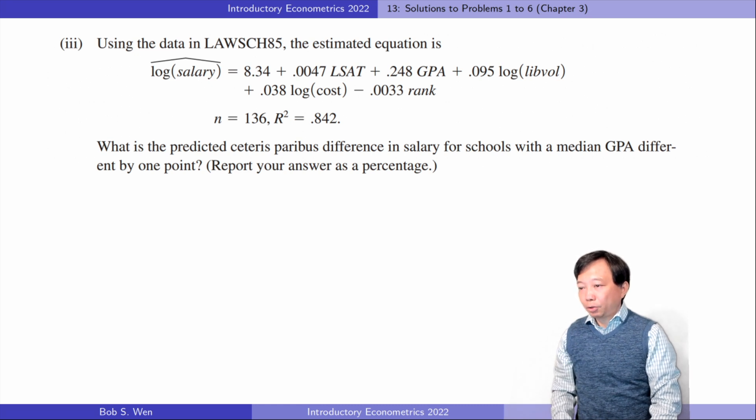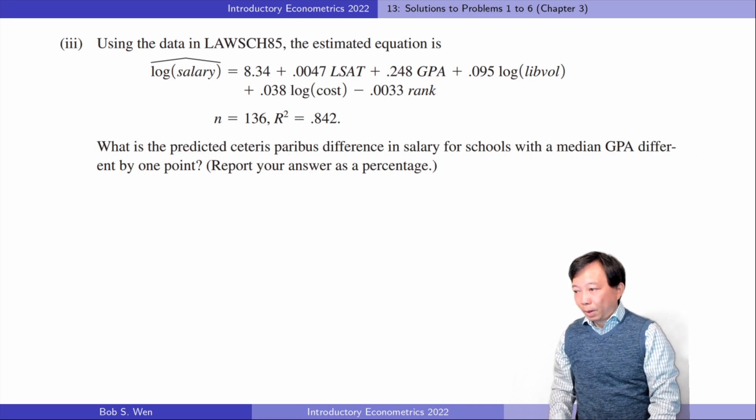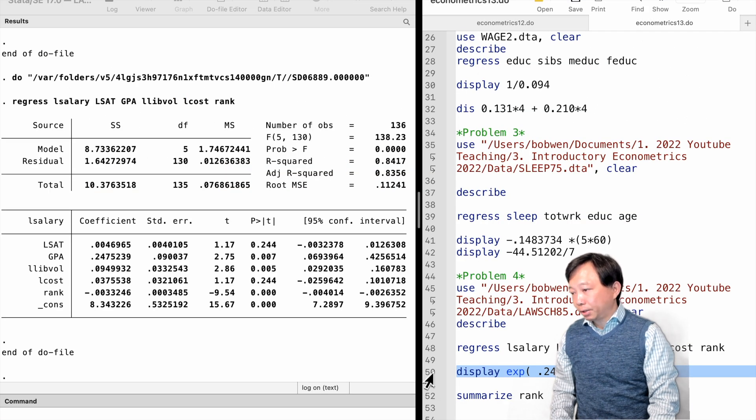For the third question, we run the regression model. The ceteris paribus difference in salary is 24.8% with a median GPA difference of one point. Notice that when the outcome variable is in the log form and the explanatory variable is in the level form, the coefficient on the explanatory variable is the fraction of change in the outcome variable with respect to one unit change in the explanatory variable. To translate to a percentage, we multiply it by 100. A more precise percentage change can be calculated as follows.